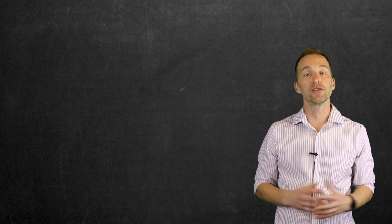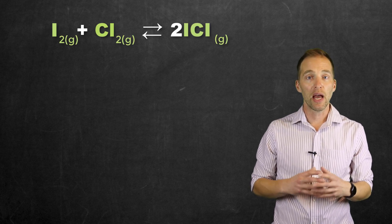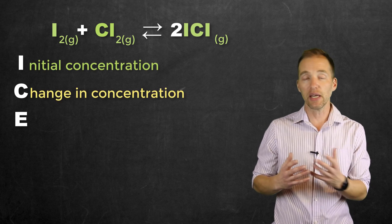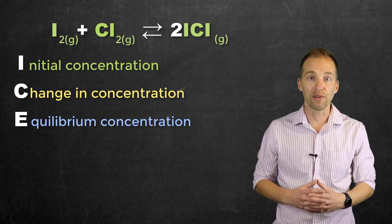So before we even begin to construct our ice table, we need to have a balanced equilibrium equation. And once we have that, we can now set up our ice table like this, with I, C, and E lined up down the left-hand side. We are setting up a table after all.